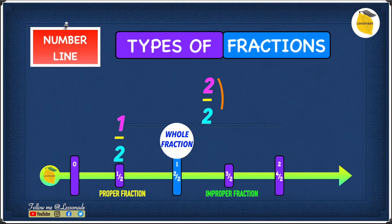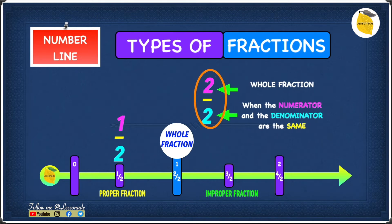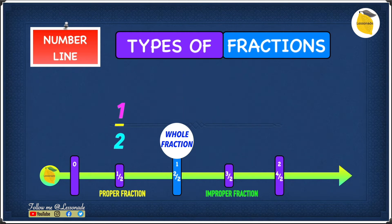Now let's compare 2 over 2. Let's have a look at the numerator, which is 2, and the denominator, which is also 2. Since 2 and 2 are both the same, 2 over 2 is a whole fraction. A whole fraction is when the numerator and the denominator are the same. Now let's see where 2 over 2 goes on the number line — it goes right where the whole fraction is.